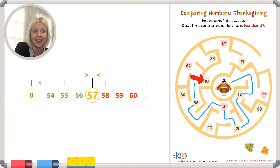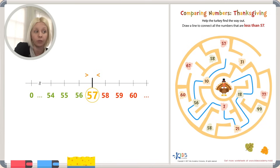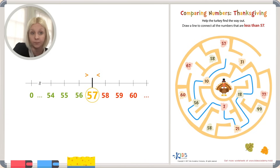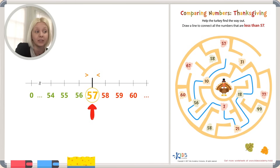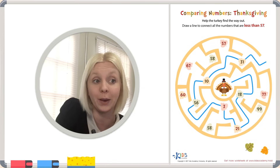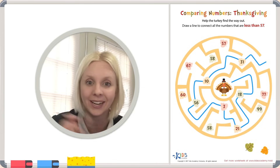Let's keep going around here. We can either go to 10 or 67. 10 is less than, so we're going to go this way. Then we've got two more choices: 57 or 31. This one's a little bit tricky — we're looking for numbers that are less than 57. Is 57 less than 57? No, it's actually equal to, which means the same as. So we need to go less than. Our other choice is 31, which would be on this side of the number line. So we're going to go to 31. And look at that — we made our way out! We got our turkey out of our maze. Great job today. Bye-bye.